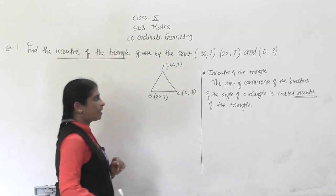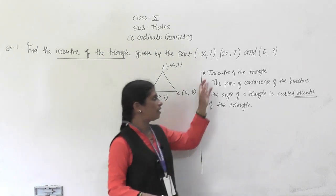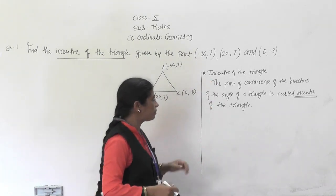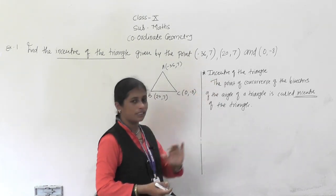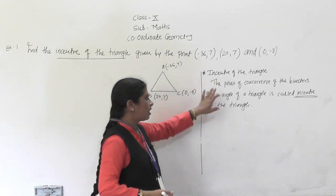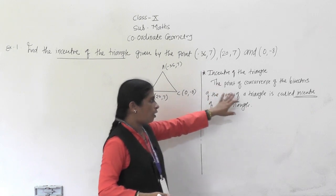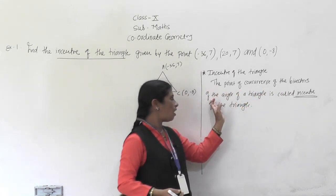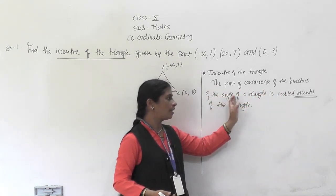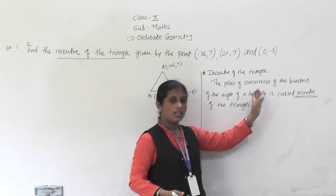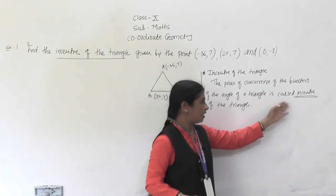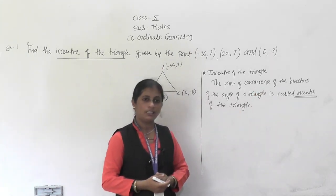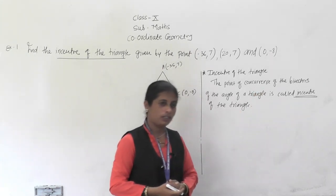In the last lesson we learned about the incenter of a triangle. The point of concurrence of the angle bisectors of a triangle is called the incenter of the triangle.